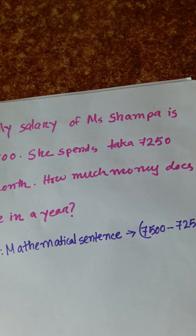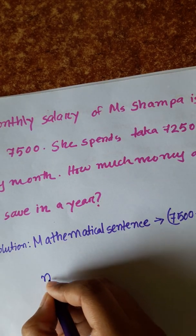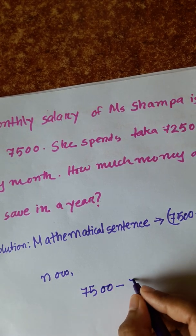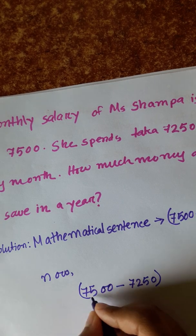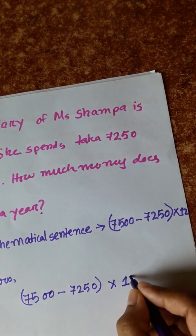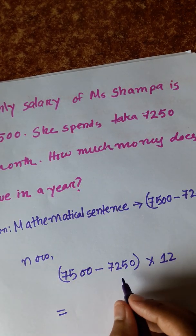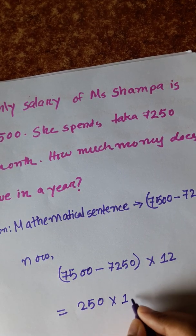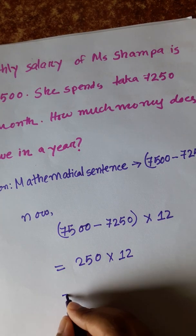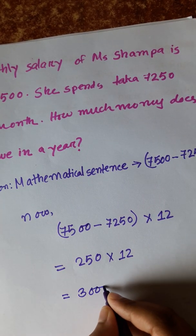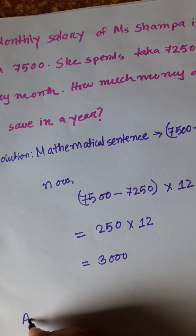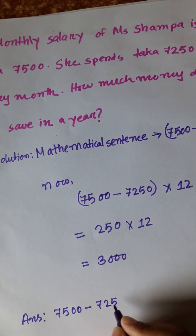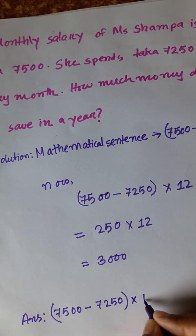So: 7500 minus 7250 into 12 equals 250 into 12 equals 3000. The answer is Taka 3000.